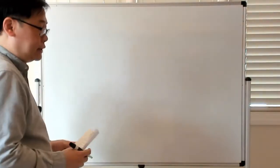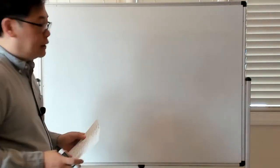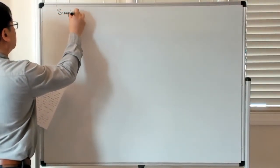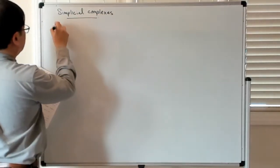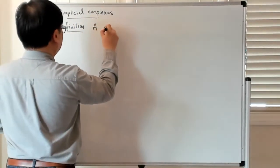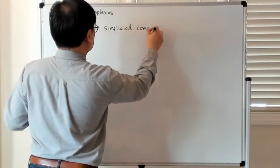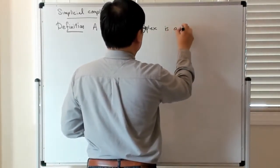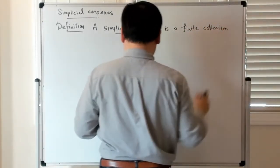So now we'll talk about simplicial complexes, which are a way to assemble simplices together to start representing topological spaces. Let me give you a definition for what a simplicial complex is. A simplicial complex is basically a finite collection of simplices, and we denote this by K.